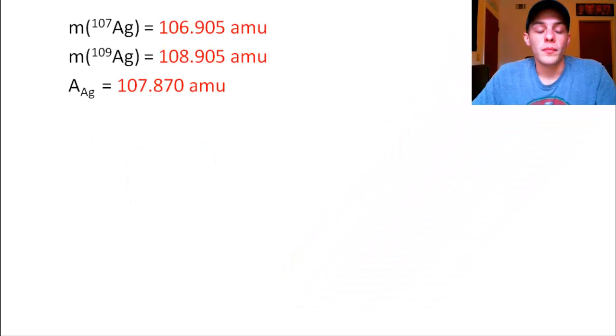So let's figure this out. So again, we have three important pieces of information. We have the mass of silver-107, the mass of silver-109, and we have the atomic mass of silver.